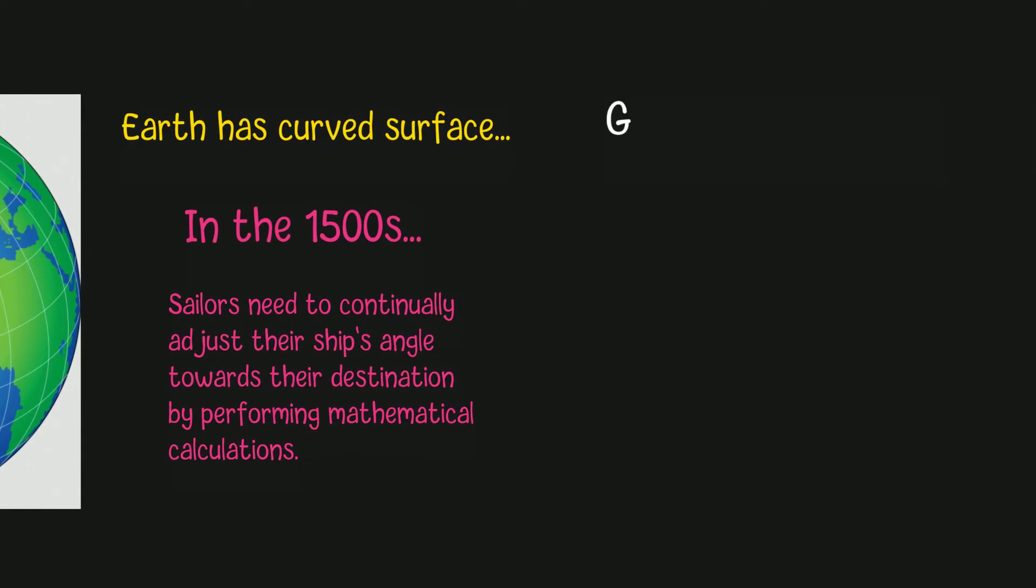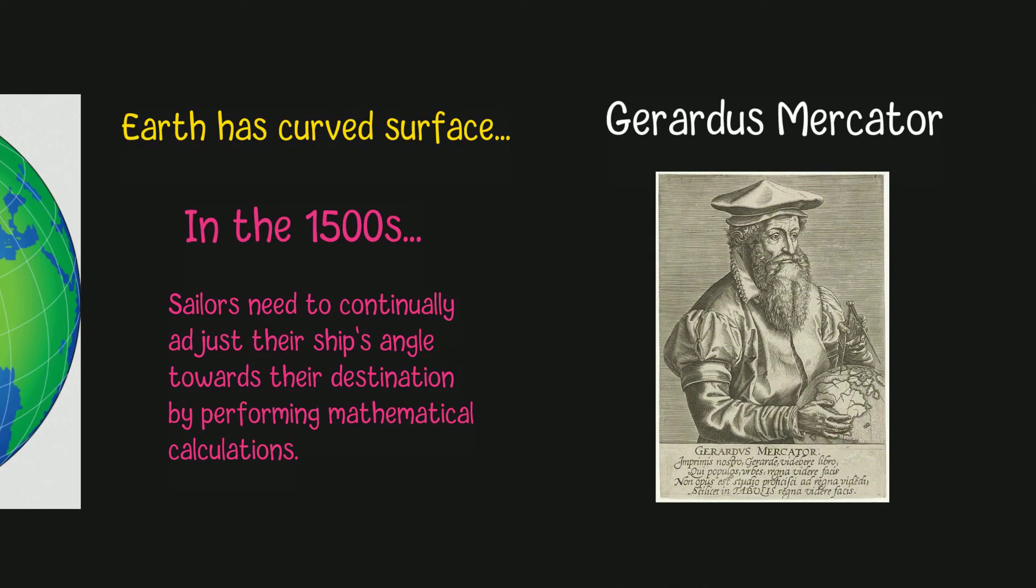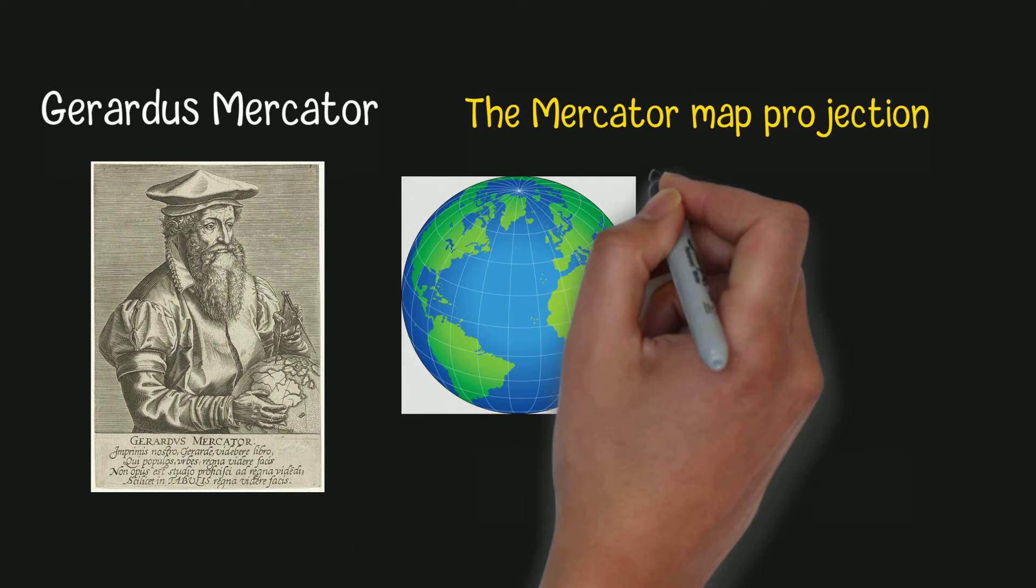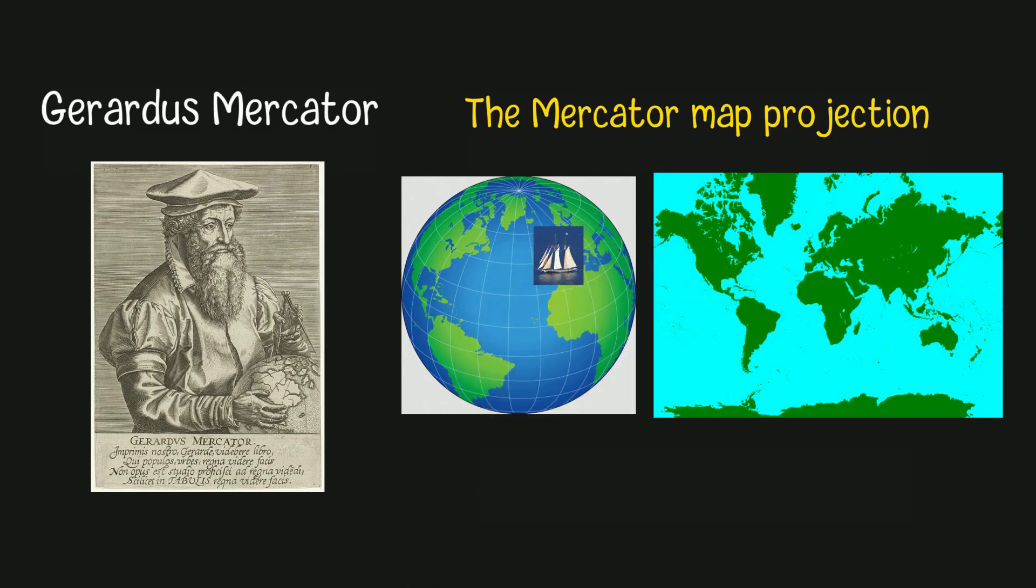The Mercator Map Projection, invented by Gerardus Mercator, revolutionized this process, with the first map using this projection introduced in 1569. This innovation eliminated the constant need for recalibration by maintaining consistent angles, and it has become a popular way of map projection until today.